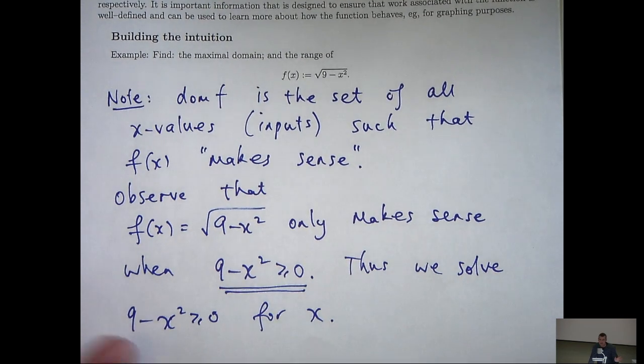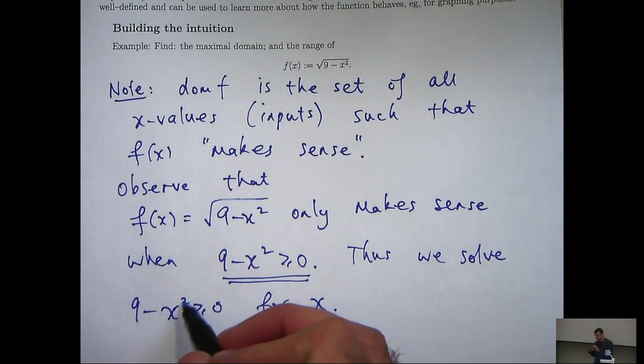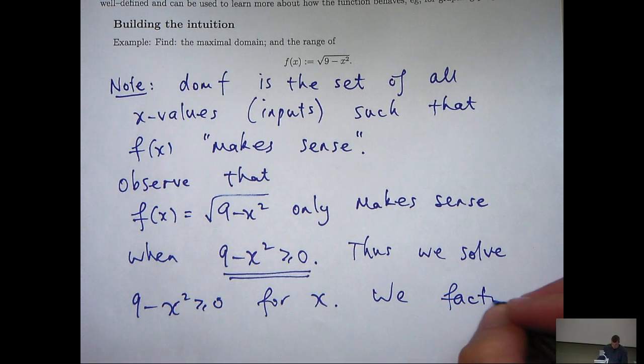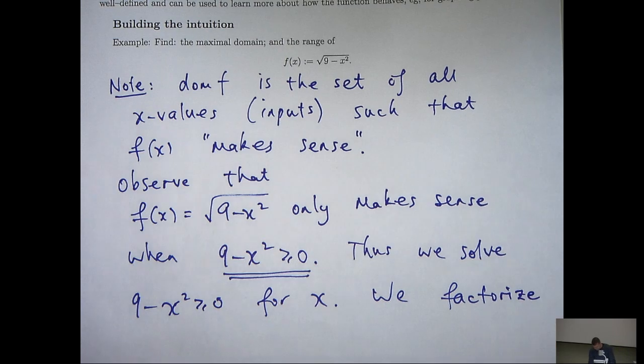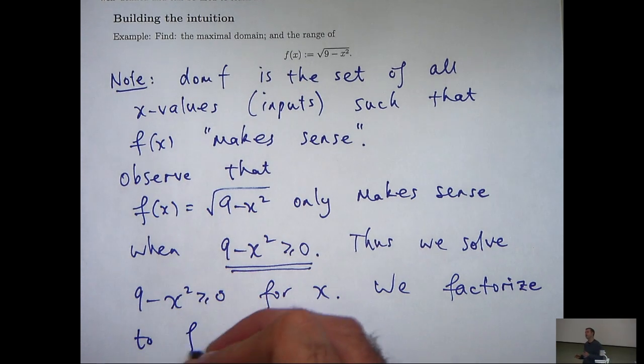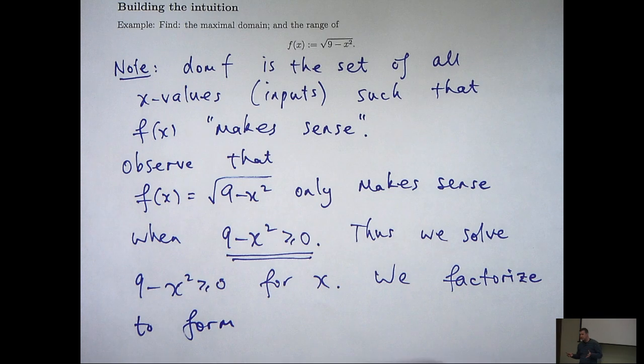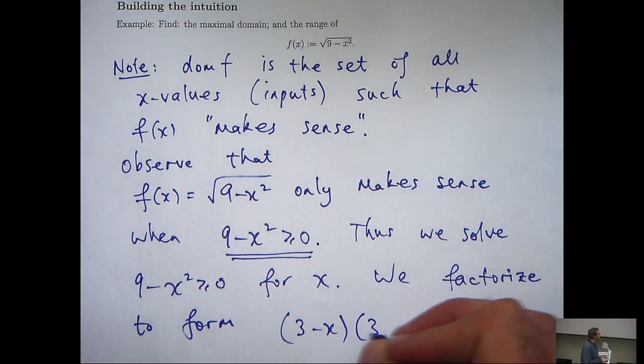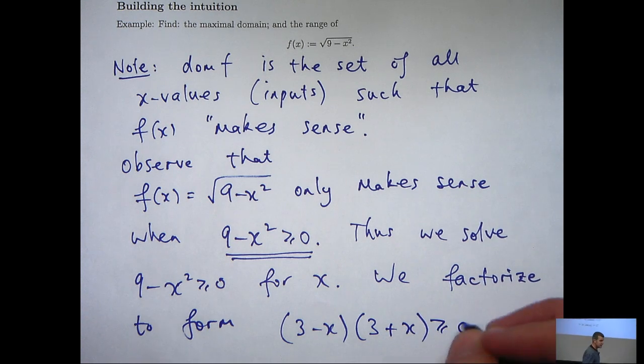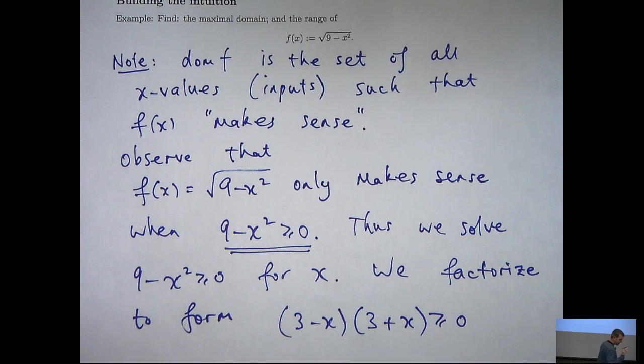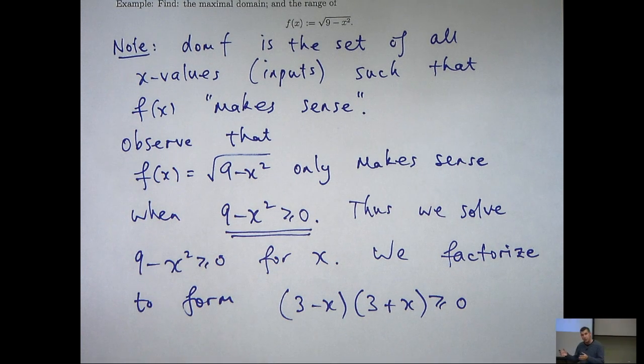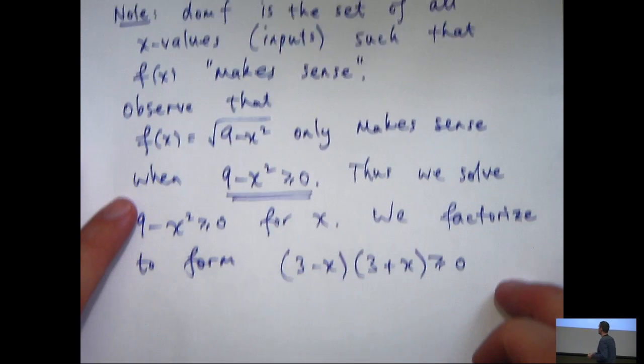Okay, so you can solve this in a number of ways, you can do it algebraically or graphically. First of all, I'm going to factorise the left hand side. So I can factorise and form this equivalent inequality. And then, it's just a matter of solving this again, either algebraically or graphically. I'm going to do it graphically.